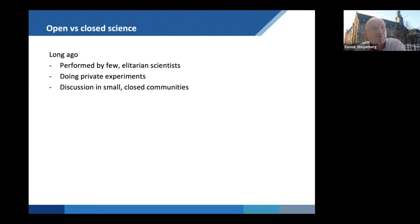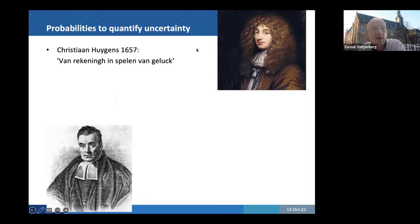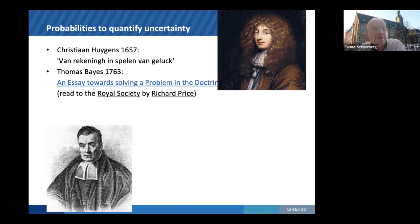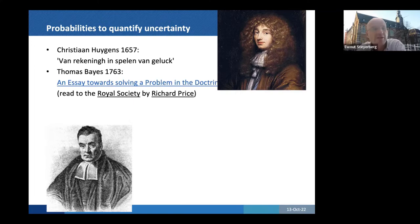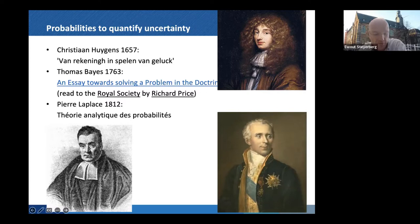So open data for better predictions is the basic idea. Open is in contrast to closed science. Long ago, the scientific field was dominated by a few elitarian scientists who did their private experiments, small scale, and had discussions in small closed communities. Great things came from that. This is Huigens on probability theory, Thomas Bayes on the Bayes theorem, Laplace who wrote really famous books.